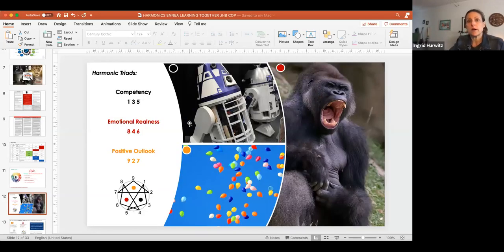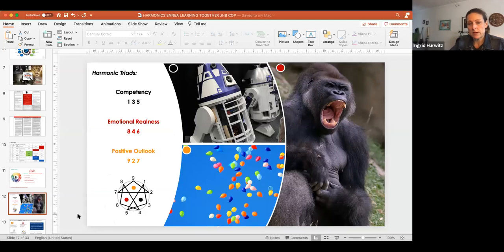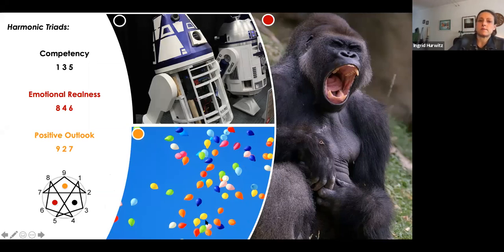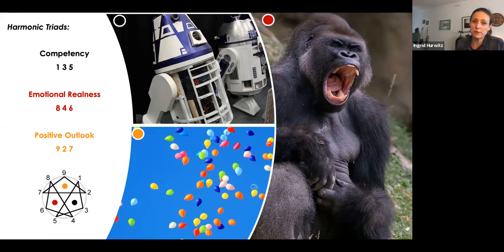For those who don't know what the harmonics are, these are the triads - three triangles in the enneagram. Russ Hudson discovered these triads in the 90s, and I say 'discovered' deliberately because there's such power in them. There are three of them: the top one, Competency, is types 1, 3, and 5, represented by a robot symbol.